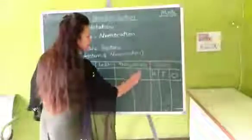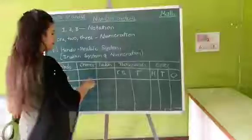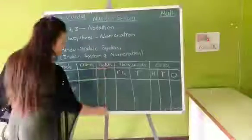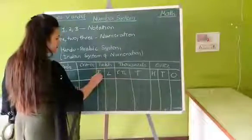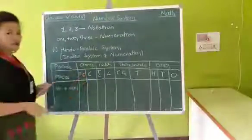Thousand have two places. Thousand, ten thousand. Lakh have two places. Lakh, ten lakh. And crores have two places. Crores and ten crores.